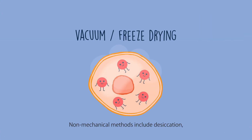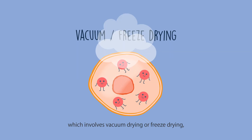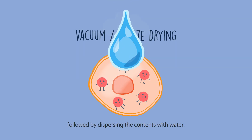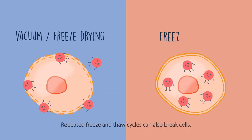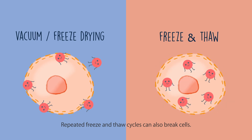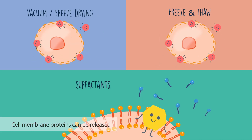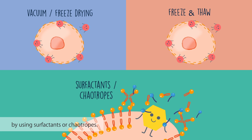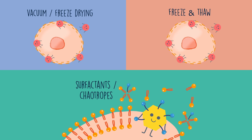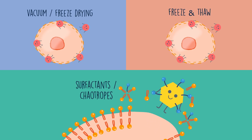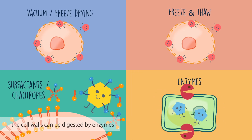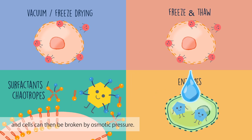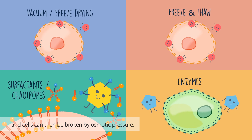Non-mechanical methods include desiccation, which involves vacuum drying or freeze drying, followed by dispersing the contents with water. Repeated freeze and thaw cycles can also break cells. Cell membrane proteins can be released by using surfactants or chaotropes. For plant cells, the cell walls can be digested by enzymes, and cells can then be broken by osmotic pressure.